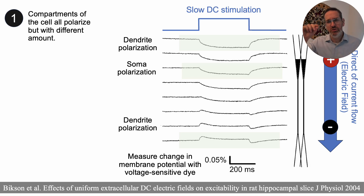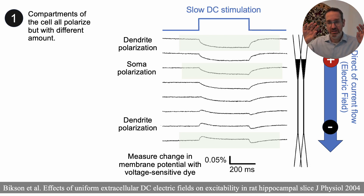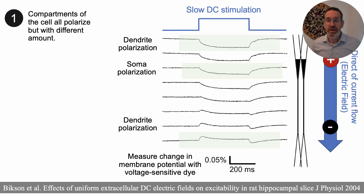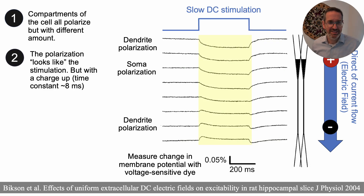Lesson number one: if you look at different parts of the cell going from top to bottom, the type of polarization you see is different. The dendrites near the top are being hyperpolarized, while the parts of the cell near the bottom are being depolarized — and this is the same stimulation. The cell structure is being polarized differently depending on where the compartments are. So it's true to say everything is polarized, but the direction depends on which part of the cell we're talking about.